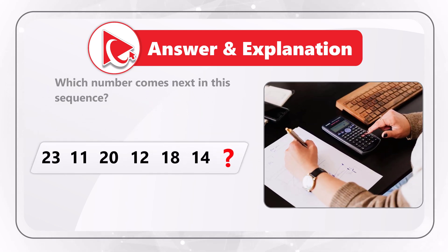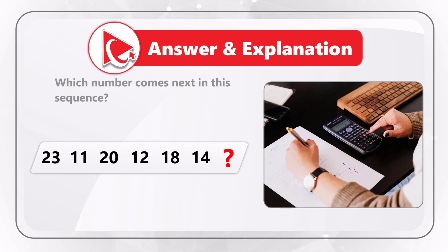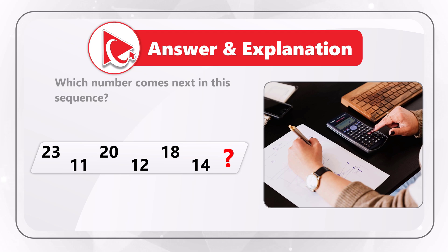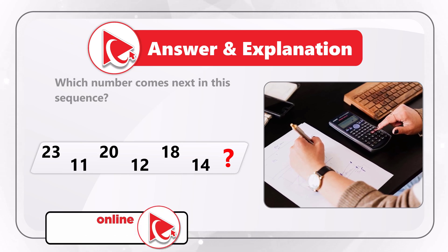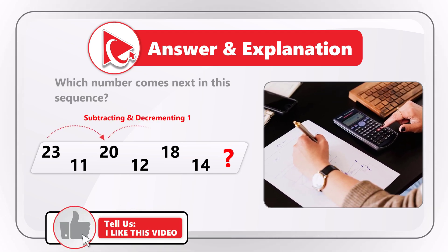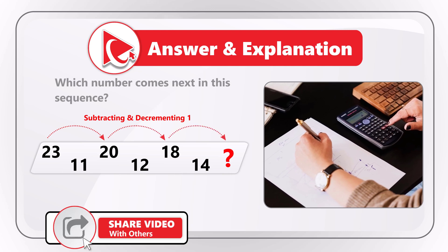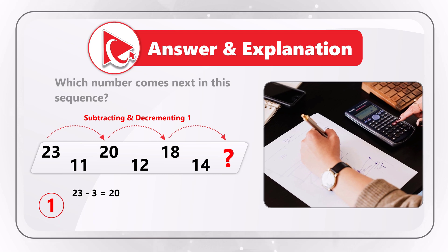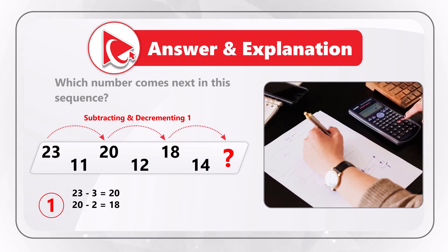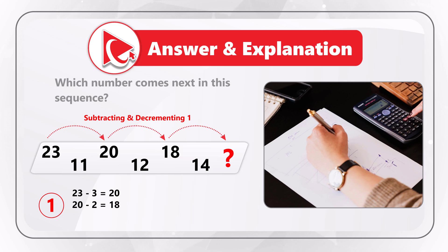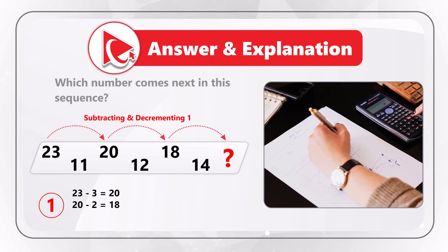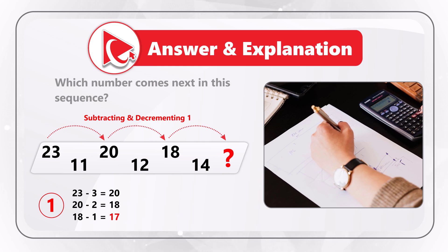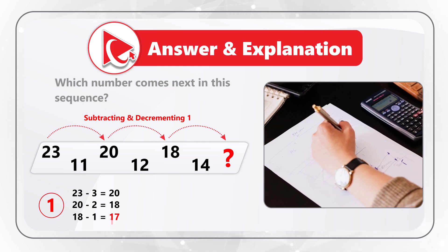The numbers 23, 20, 18, and 17 represent the first pattern. The next number is calculated by subtracting a decrementing number from the previous number. For example: 23 minus 3 equals 20. Then 20 minus 2 equals 18 — you see the 3 is decremented by 1 to get 2. The next number is 18 minus 1, which equals 17.